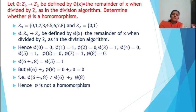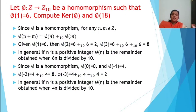But phi(6) +₂ phi(8): phi(6) = 0 and phi(8) = 0, so phi(6) +₂ phi(8) = 0 +₂ 0 = 0. Therefore phi(6 +₉ 8) = 1 ≠ 0 = phi(6) +₂ phi(8). Hence phi is not a homomorphism.